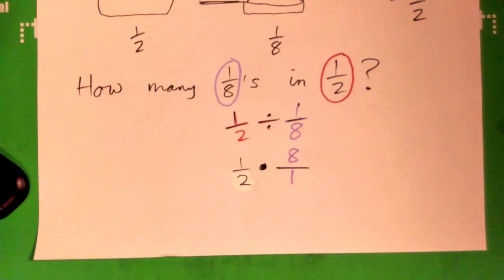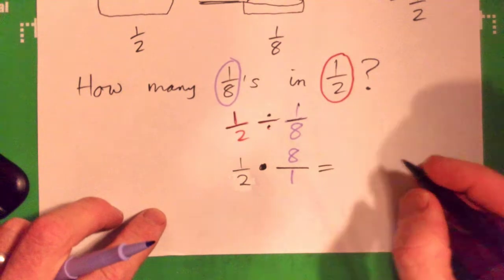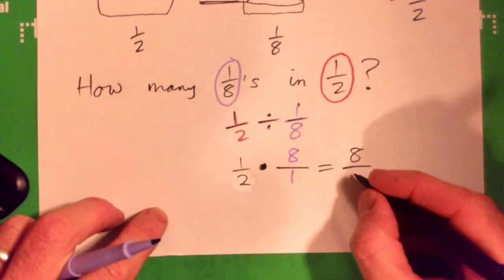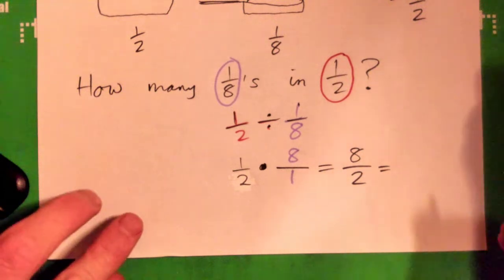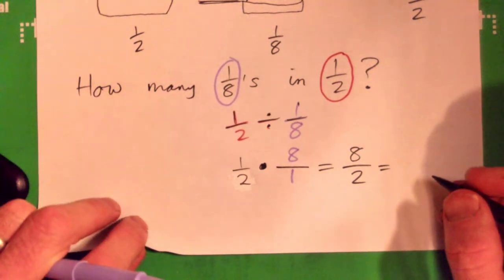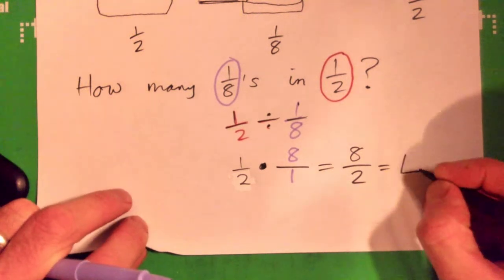And you're writing this down, aren't you? Okay. All right. And so, we can multiply, we can go 1 times 8 is 8, over 2 times 1 is 2, and 8 over 2 gives what? 4. The number 4, right?